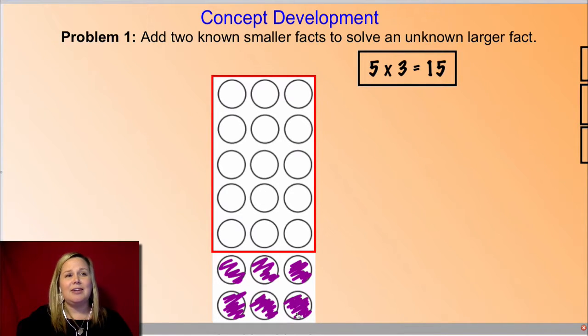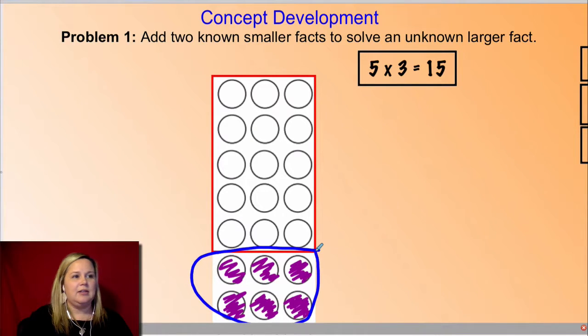Now what I want you to do is I want you to write next to your array, next to maybe like your 5 x 3 that you already have, I want you to write a multiplication sentence that describes just the shaded part of your array. So now just this part down here that you shaded in, just that singular part right there.